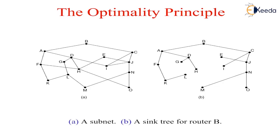It states that if router J is on the optimal path from router I to router K, then the optimal path from J to K also falls along the same route. To see this, call the part of route I to J as R1 and the rest of the route as R2. So, if a route better than R2 exists from J to K, it could be concatenated with the route R1 to improve the route from I to K. This will contradict our statement that R1 R2 is optimal.